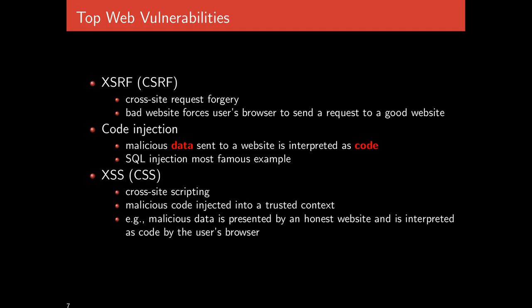There are three major classes of web vulnerabilities we'll be talking about in the remaining lectures. The first is called cross-site request forgery, or XSRF, also known as CSRF. This is where a bad website forces the user's browser to send a request to a good website.